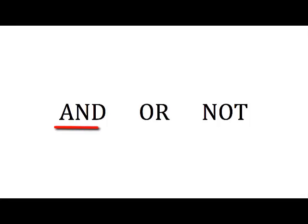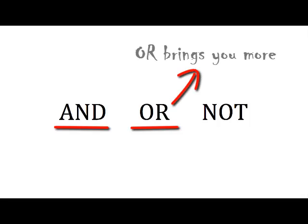When used appropriately, AND, OR, and NOT are basically magic words that can help you retrieve better search results. AND and OR are probably the magic words that you will be using the most. A good way to remember what each of these does is to recall the phrase: OR brings you more.